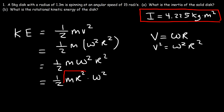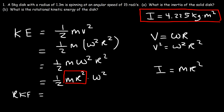The sum of the quantity m r squared is related to the inertia of an object. So therefore the rotational kinetic energy is one half times the inertia times omega squared.